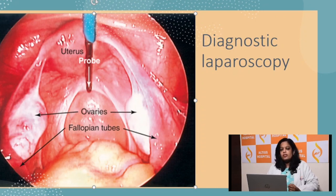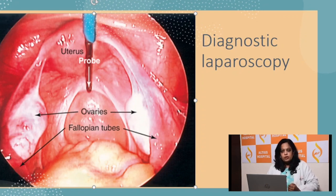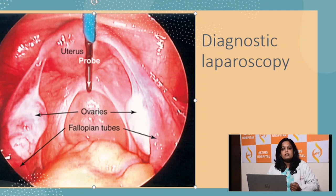We also look for any adhesions on the posterior surface of the uterus to the rectum, which can be relieved if she is having problems with constipation or dyspareunia, which can indirectly be a reason for endometriosis.